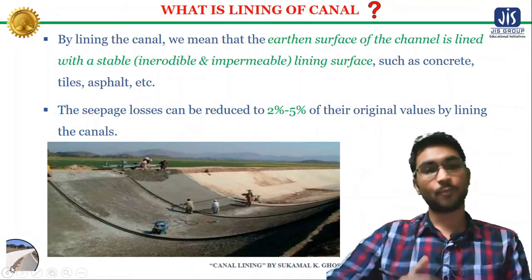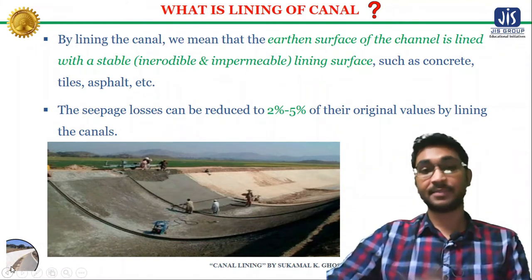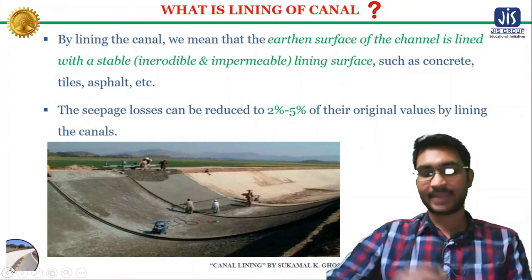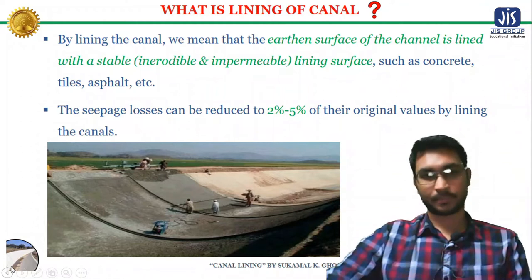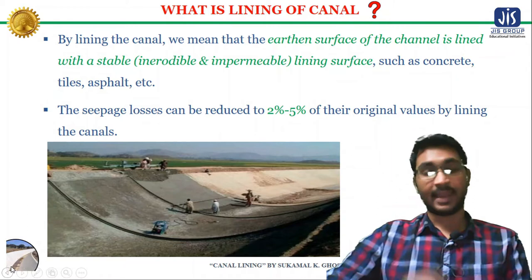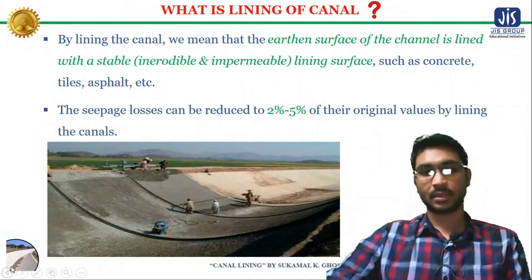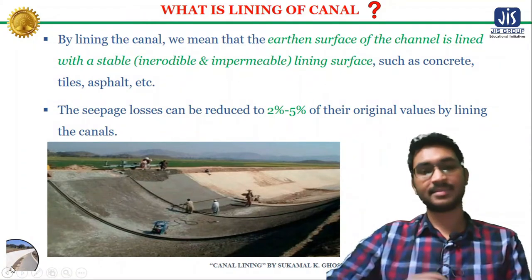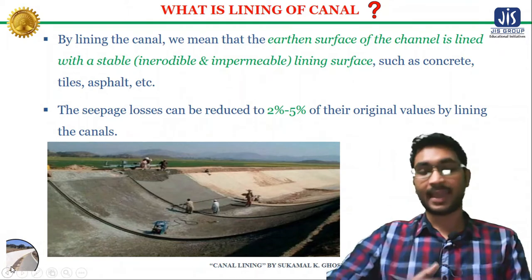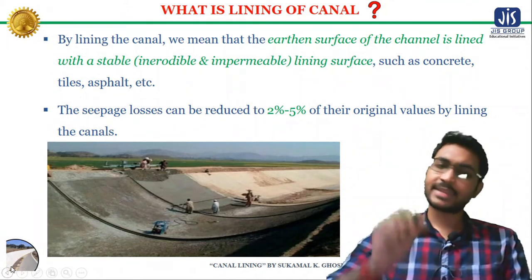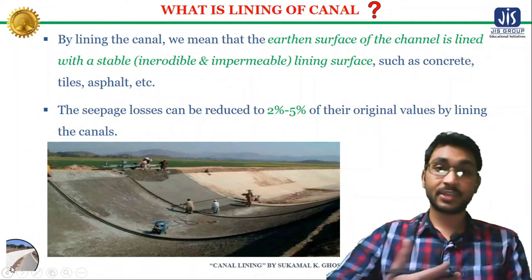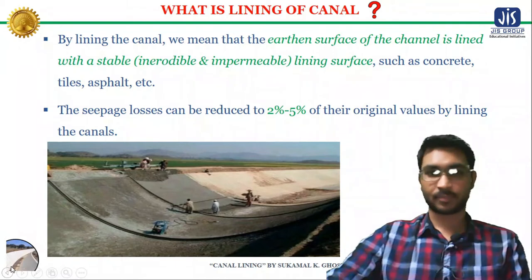To secure the benefits of irrigation, a tremendous amount of capital has been invested in irrigation projects in our country. Since the investment is very large, irrigation water is a very costly commodity, and there should be no wastage during its carriage from the reservoir to the fields. Most of the canals constructed in India are unlined, and hence a large part of this costly irrigation water is lost through percolation, absorption, and seepage. It has been estimated that 25 to 50 percent of irrigation water is lost due to seepage.